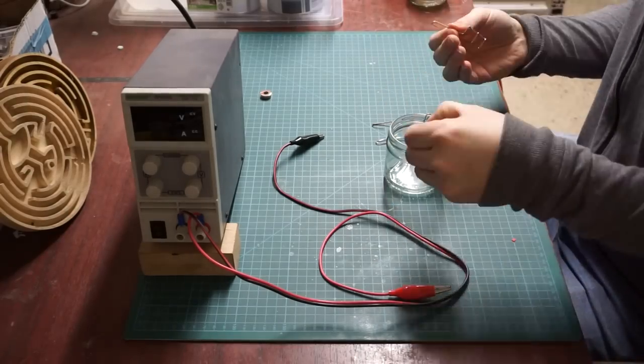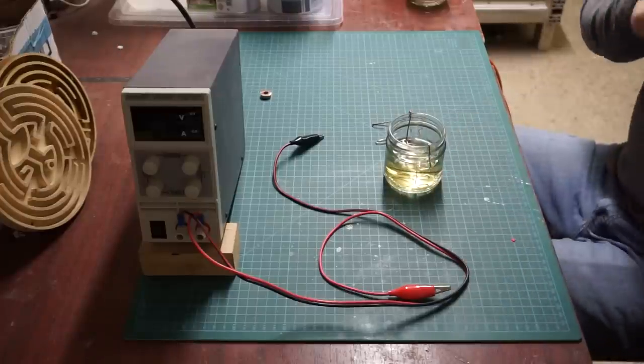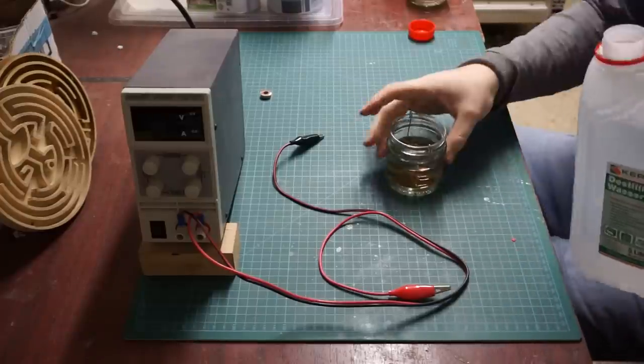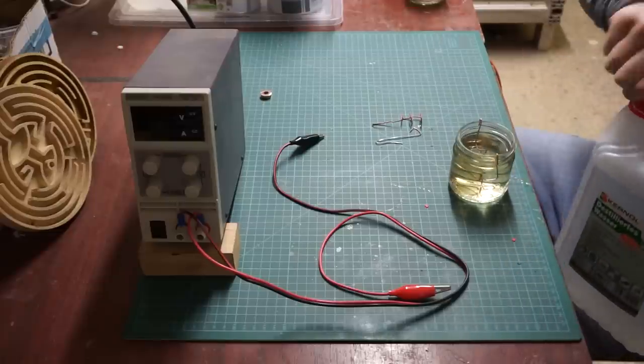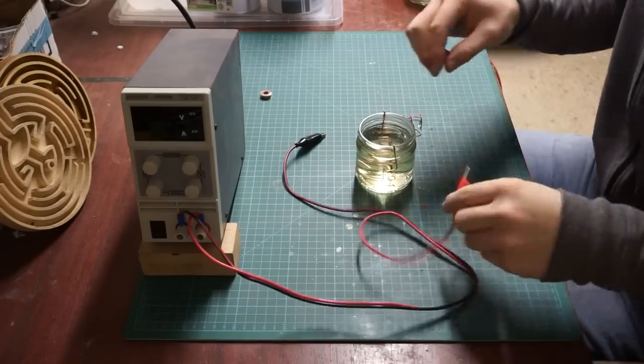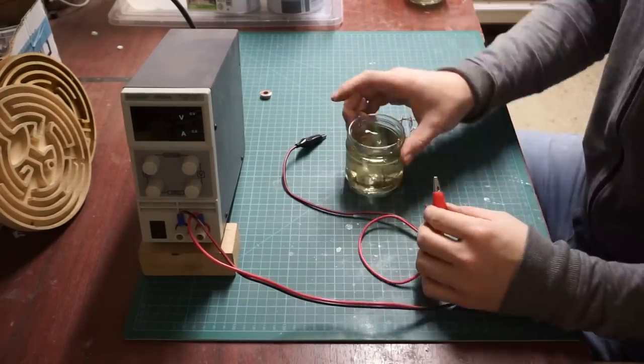After our first successful attempt of electroplating with baking soda we can now investigate another option. This time we're using a typical household vinegar as an electrolyte. I diluted the vinegar with about the same amount of distilled water and put a set of new electrodes in our little coating bath.